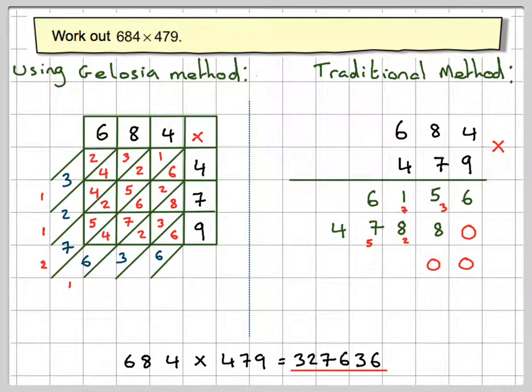and you do 4 times 4, which is 16, carry the 1. 4 times 8, which is 32, so that number becomes 33. 3 carry the 3. And 4 times 6, which now becomes 24, plus the 3, which makes 27.